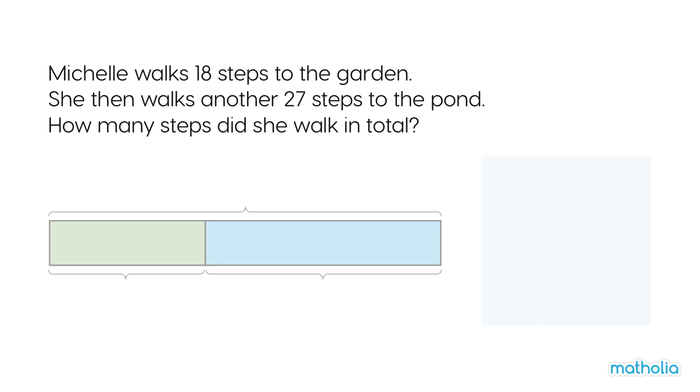Let's use a bar model to help find the answer. She walks 18 steps to the garden. Write 18 here and label the bar.